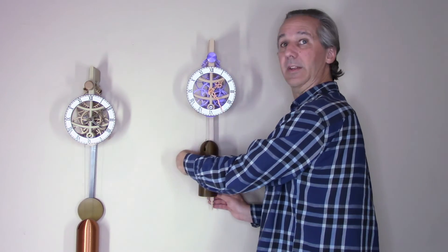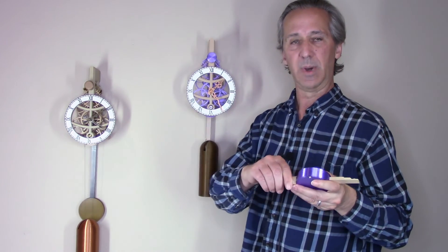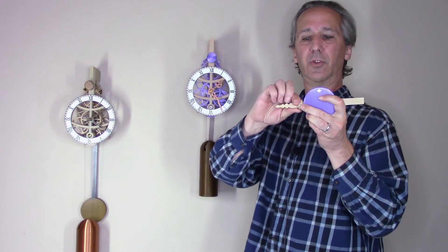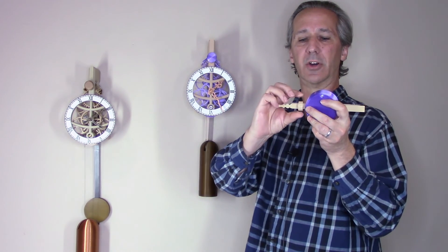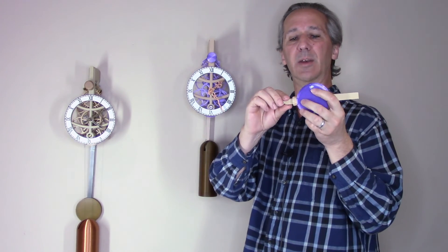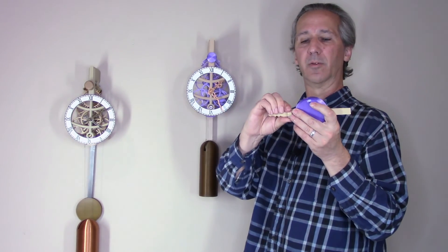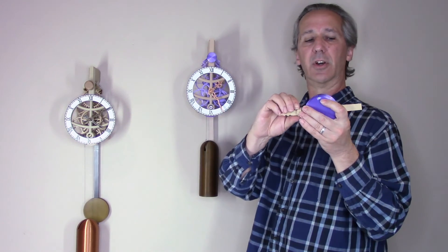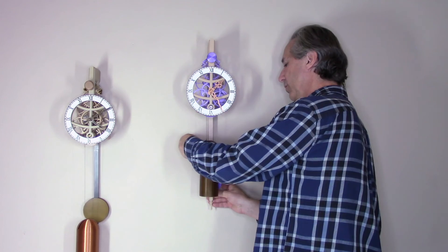The time can be adjusted on this clock by loosening the nuts at the bottom of the pendulum and turning them and then snugging them back up. You can make very small adjustments, a fraction of a turn, and get this clock accurate to a minute or two per week.